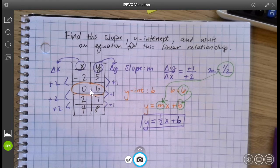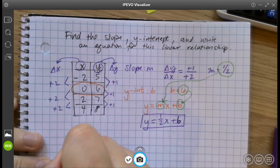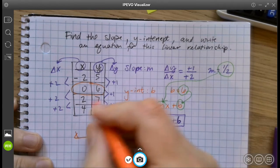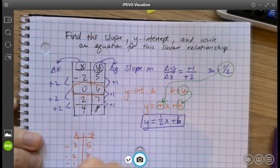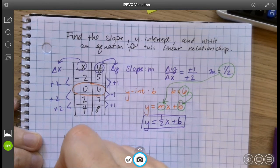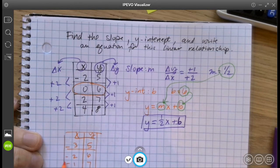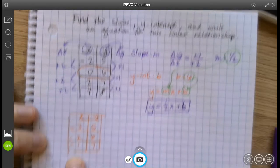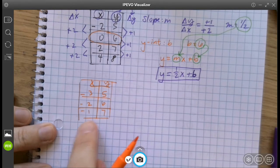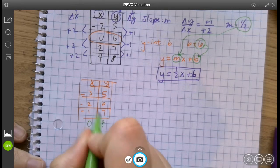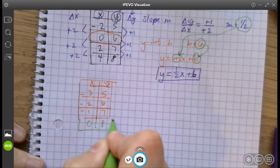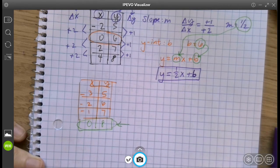The other thing about y-intercept, sometimes it's not in your table. Sometimes you have to find it. So, for example, if I did this, I'll go negative 3, negative 2, negative 1, 5, 6, 7, 8. So if I had this table, x equals 0 is not here, but I could extend my table. Just extend the pattern. That's your y-intercept. So sometimes you have to extend the pattern.